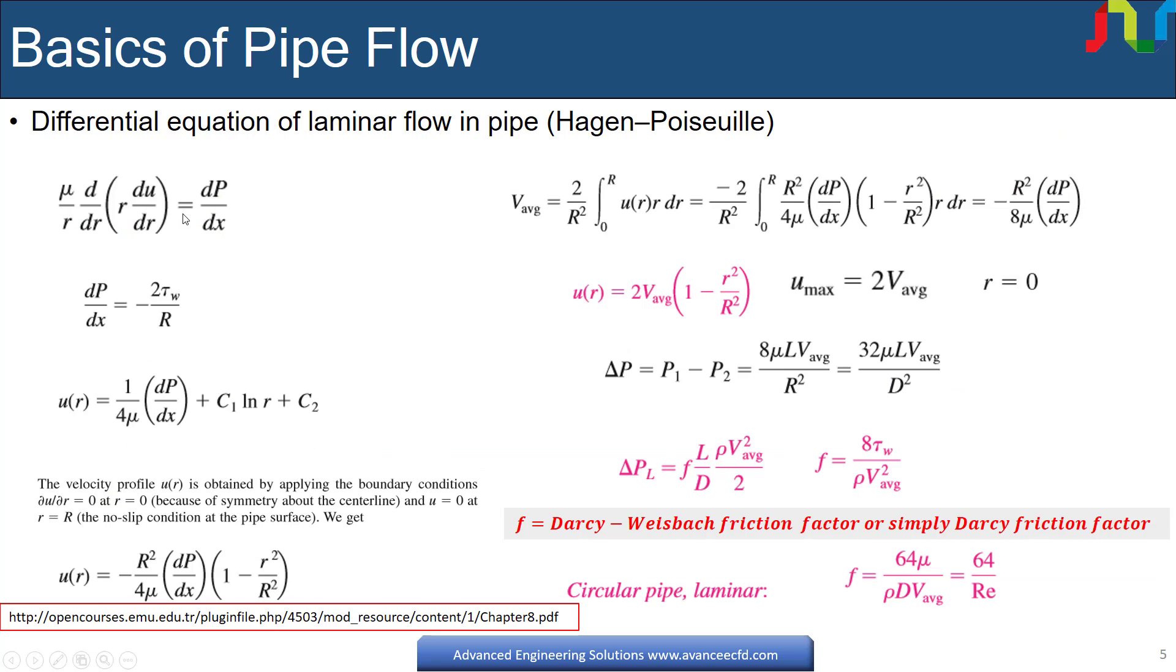By applying force balance on the fluid elements of radius R and thickness delta x, we will get that the pressure gradient is equal to ratio of negative twice of wall shear stress to radius. By integrating the differential equation for laminar flow in pipe twice and setting boundary conditions as given here, we will have velocity as shown here.